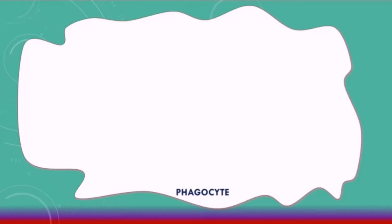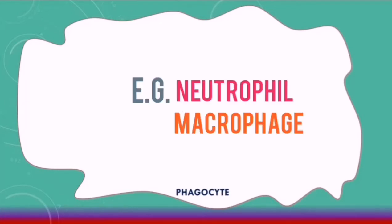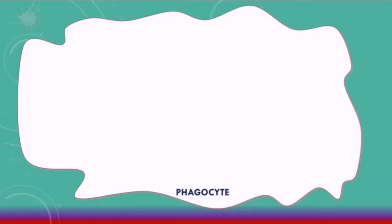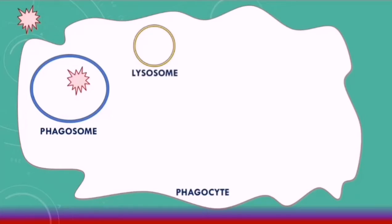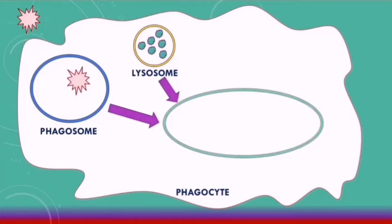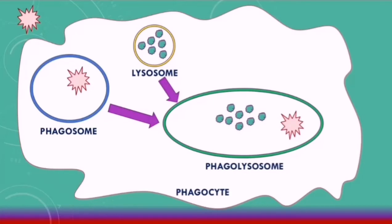Here's a phagocyte such as a neutrophil or a macrophage. When a phagocyte encounters an antigen, it will engulf the antigen and package it into a phagosome. Inside the phagocyte, there are also important organelles called lysosomes, which contain important granules for defense against pathogens. Phagosomes and lysosomes will come together and form phagolysosomes.